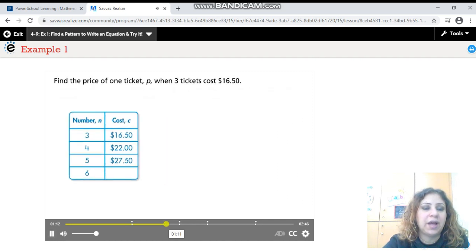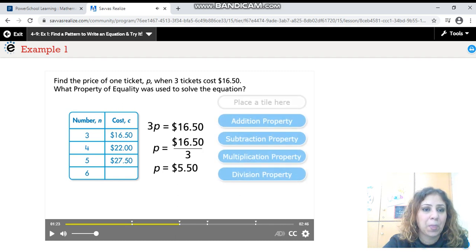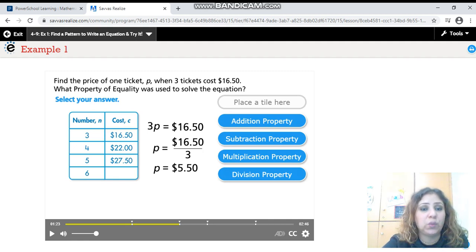Find the price of one ticket P when three tickets cost $16.50. So I'm going to write this equation: 3P equals $16.50. What property of equality was used to solve this equation? As you see, this is a multiplication equation.